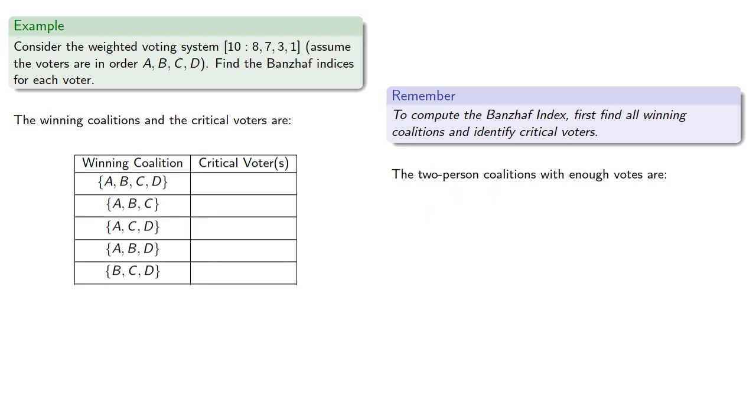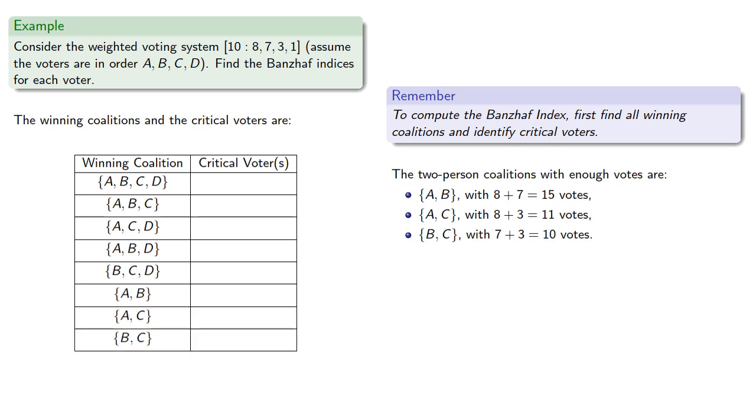The two-person coalitions with enough votes are... And since quota is 10 and no single voter has 10 votes, no single voter is a winning coalition.